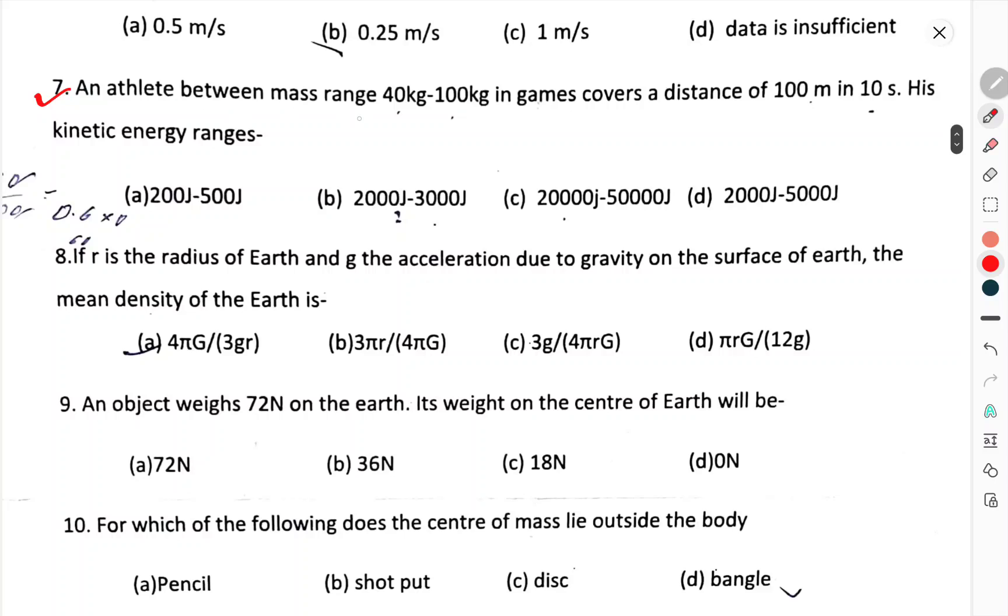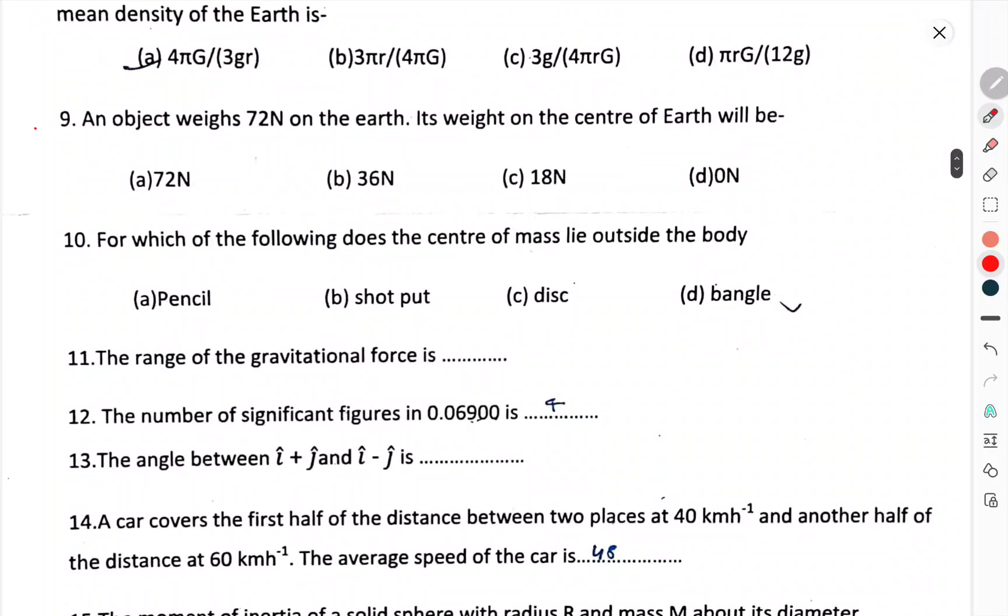Question number 7. An athlete between mass range 40 kg to 100 kg in games covers the distance of 100 meters in 10 seconds, his kinetic energy is. If radius r of the earth is g, the acceleration due to gravity on the surface of the earth, the mean density of the earth is. Question number 9. An object weighs 72 Newton on the earth. Its weight on the center of the earth will be.